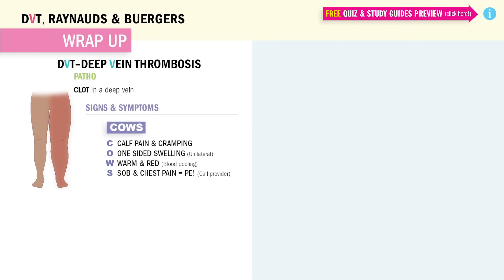Let's wrap up DVT — deep vein thrombosis — a blood clot in the deep veins, usually in one leg. Remember the acronym COWS, because one leg blows up like a baby cow. C for calf pain and cramping — it often starts in the calf, feeling like cramping or soreness. O is for one-sided swelling — a huge classic sign, unilateral swelling. Since the clot usually only affects one leg, it can't be PAD and it can't be PVD — that's how you know the difference.